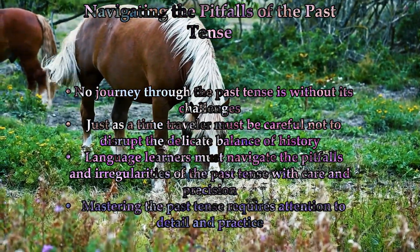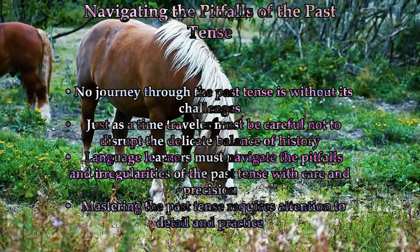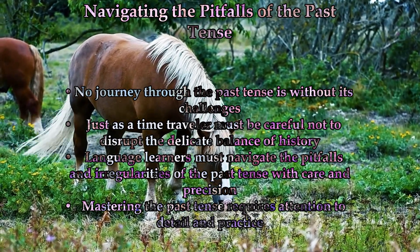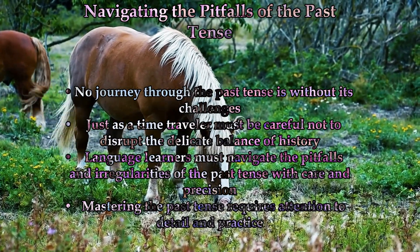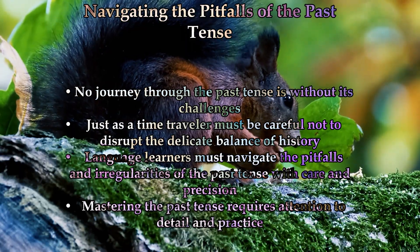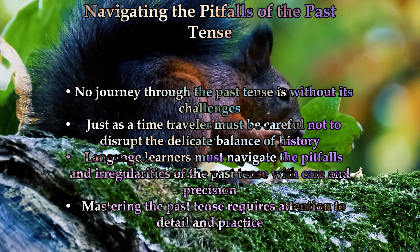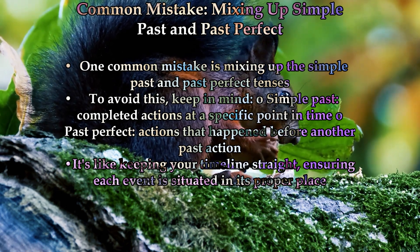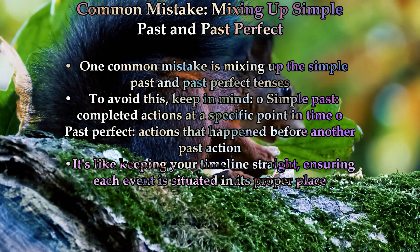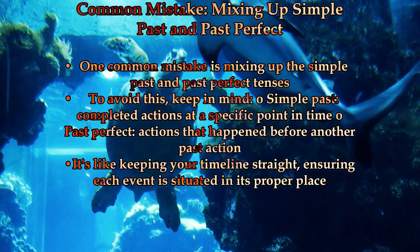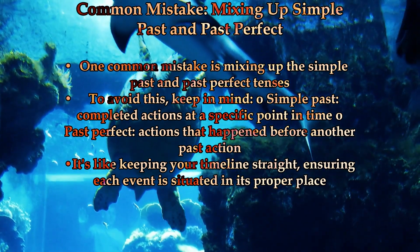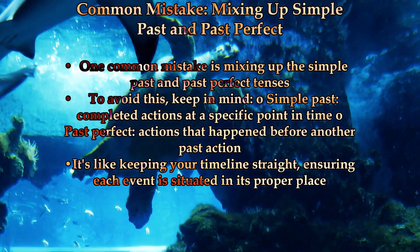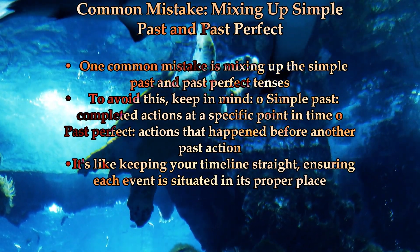Part four: navigating the pitfalls of the past. No journey through the past tense is without its challenges. One common mistake is mixing up the simple past and past perfect tenses, using one when the other is called for. To avoid this, keep in mind that the simple past is for completed actions at a specific point in time, while the past perfect is for actions that happened before another past action. It's like keeping your timeline straight, ensuring that each event is situated in its proper place.